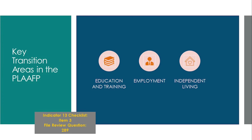Regarding assessments included in each of these key areas in the present levels section, we must be able to answer yes to each of these questions: Is there baseline data from initial assessments to allow us to demonstrate growth? Are updated results of multiple recent assessments — both formal and informal — included as evidence that assessments are updated each year? Is assessment data interpreted in a meaningful way that helps prioritize goals and skill areas? Ensuring measurable post-secondary goals are based on updated, interpreted, age-appropriate transition assessments aligns with Item 3 on the Indicator 13 checklist and File Review Question 289.